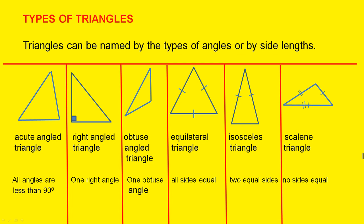Types of triangles. Triangles can be named by the types of angles or by side lengths. Now here is an acute angle triangle. Why is it an acute angle triangle? Because all angles are less than 90 degrees.